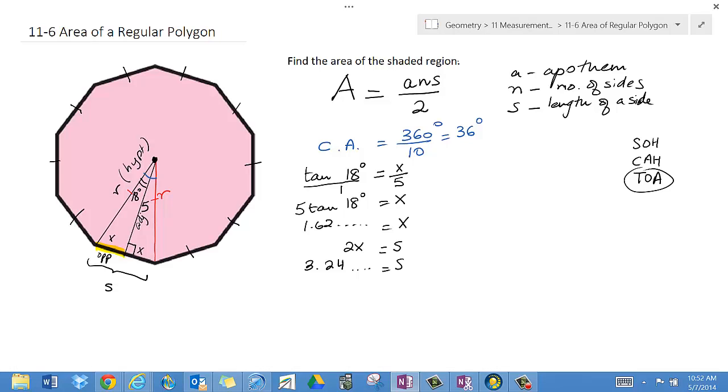Now let me go back to my formula and see if I have all the information I need. Well, I know the apothem is 5, I know the number of sides is 10, and I know the side length is 3.24, all of this divided by 2.